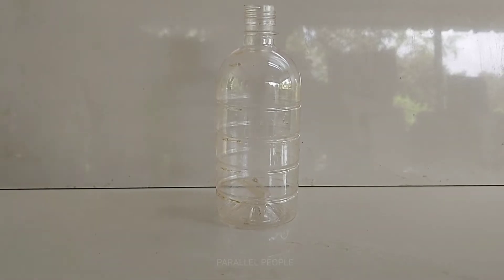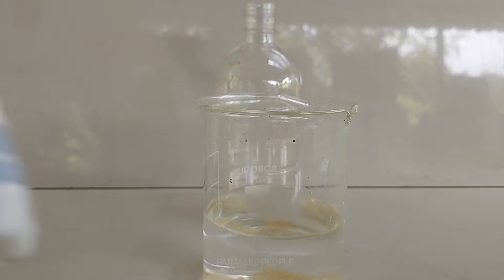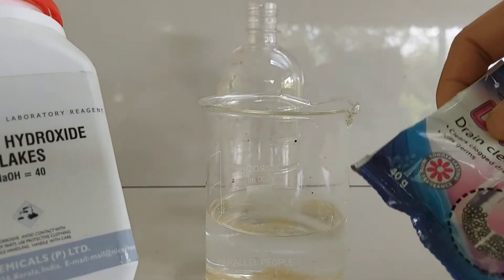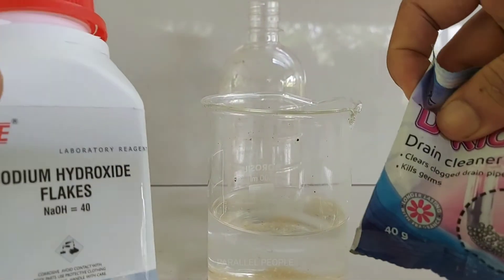To make a hydrogen balloon, first we need a bottle like this. Then take water in a container and mix sodium hydroxide in it. You can also use drain cleaner, because drain cleaner contains sodium hydroxide.